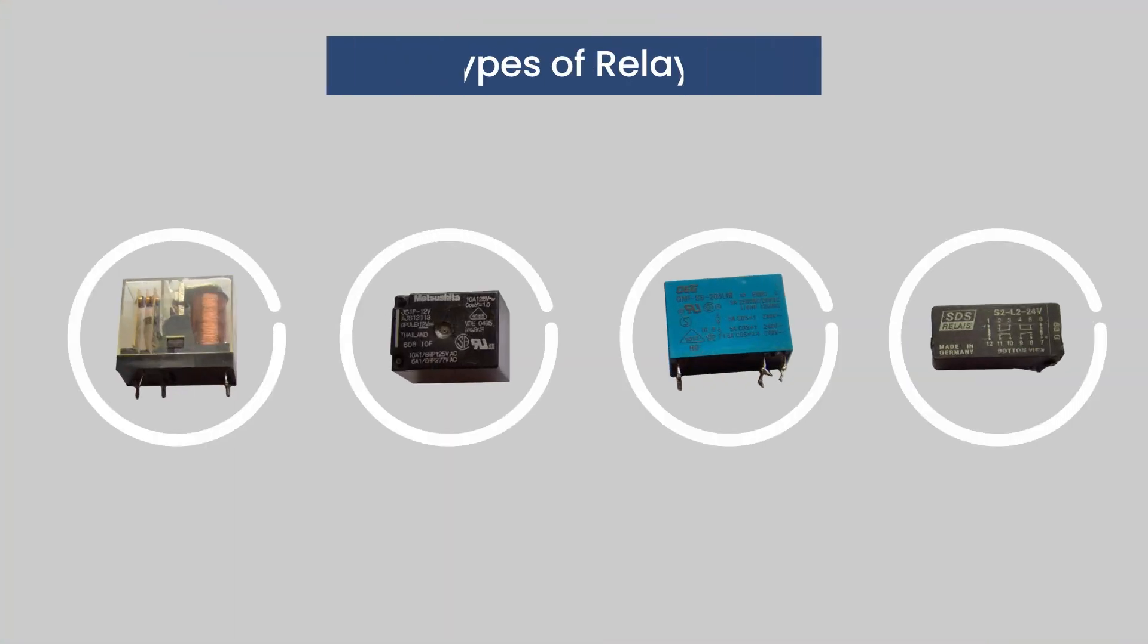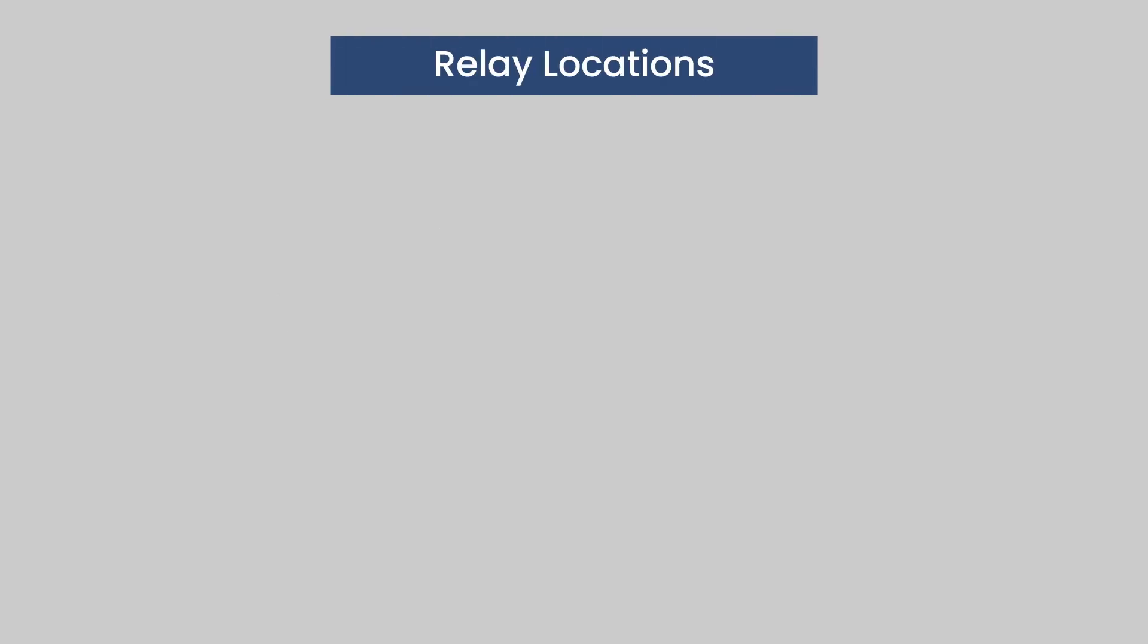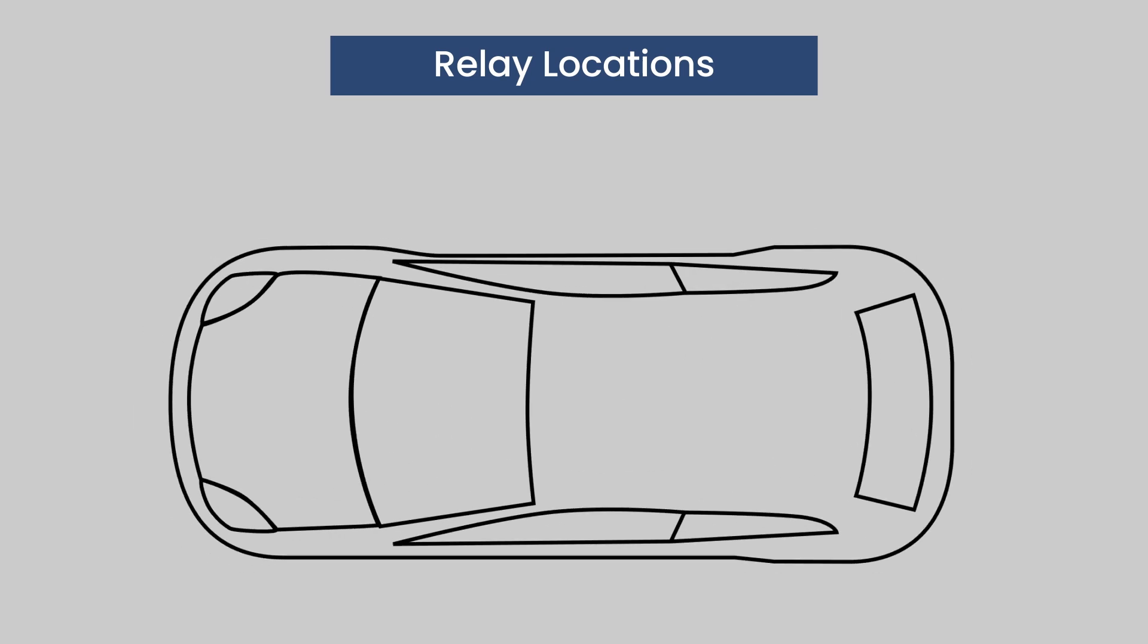Relays are basically remote switches and come in various sizes, shapes and uses. The average vehicle has about 20 of them and are located in various places in the vehicle. Usually they are in the engine compartment, behind kick panels or under the dash.